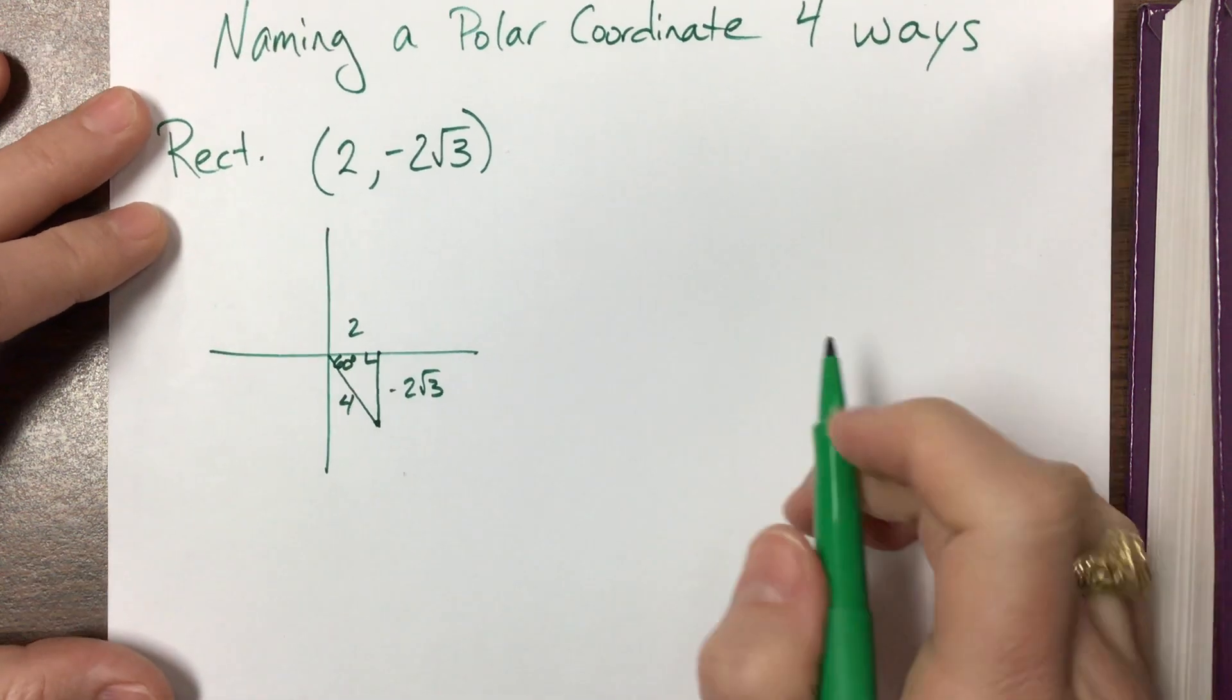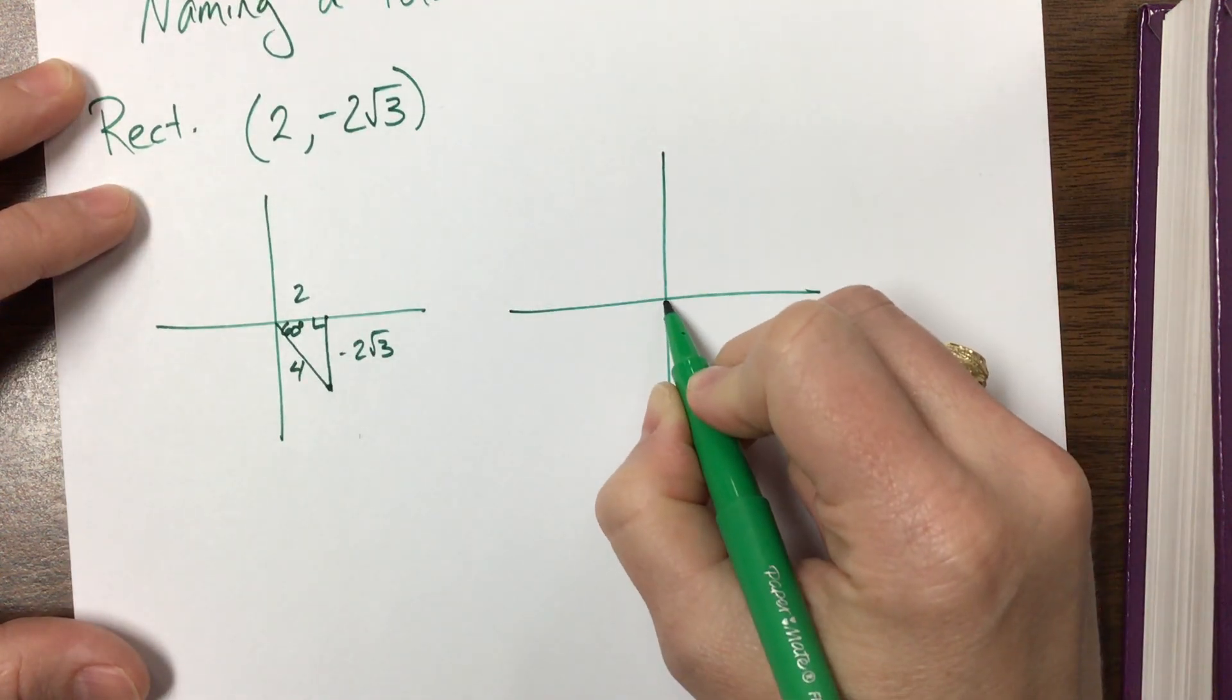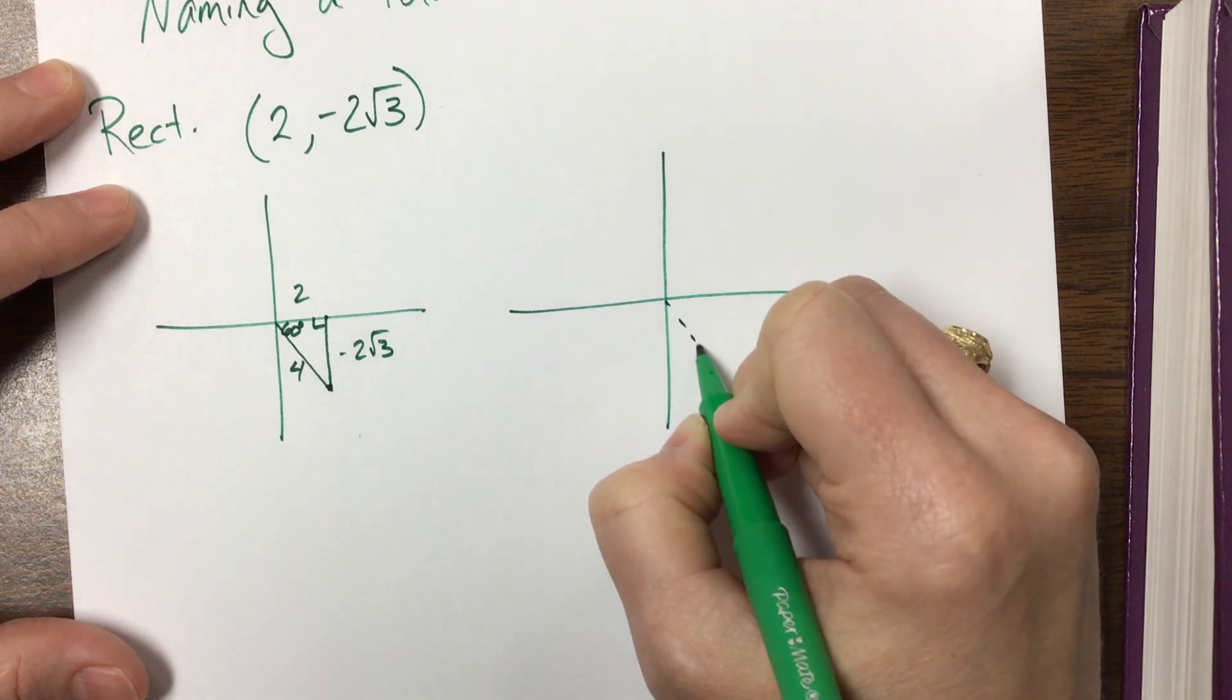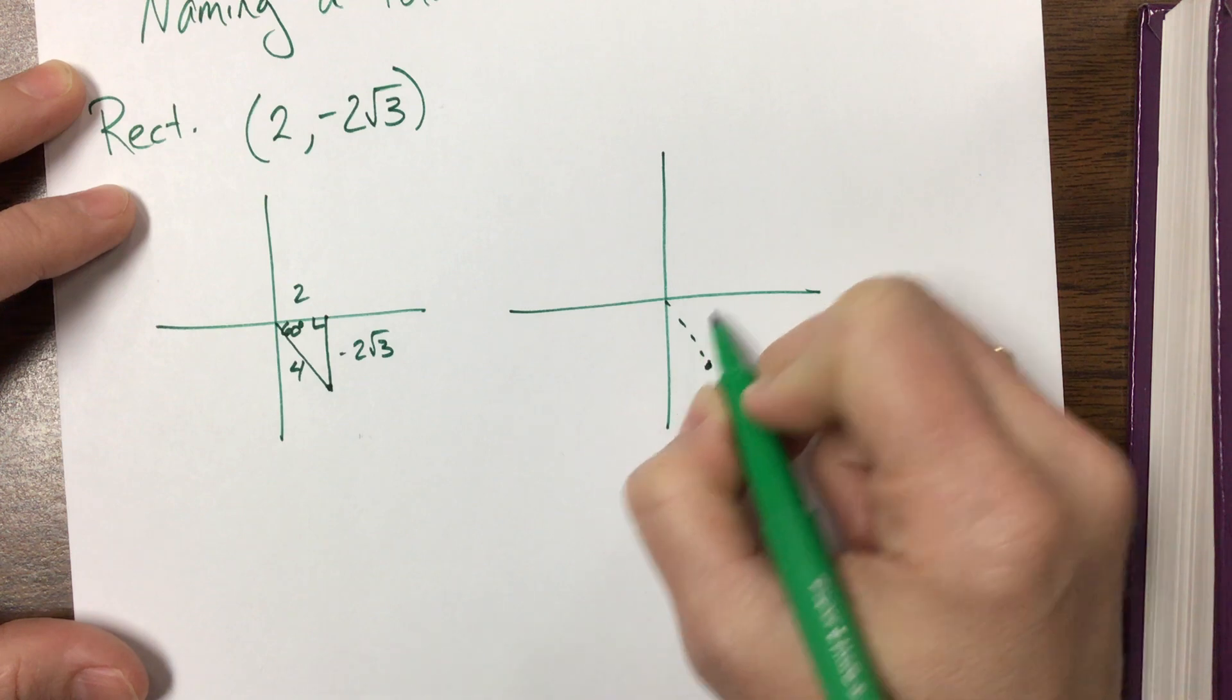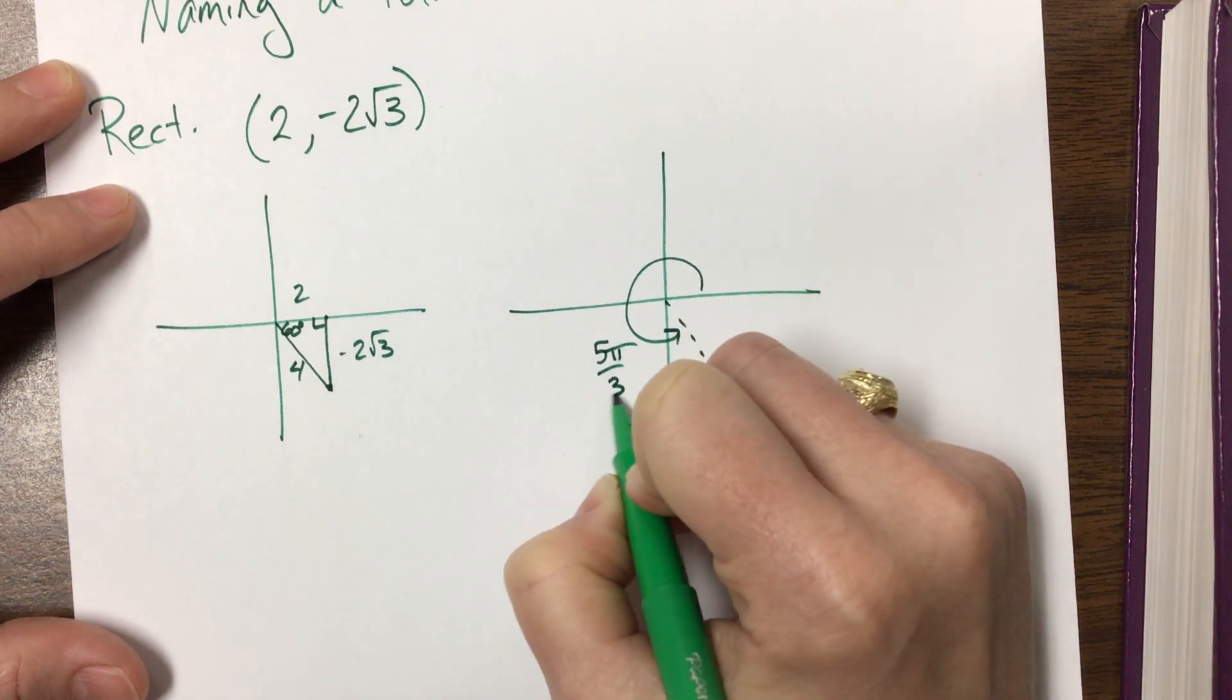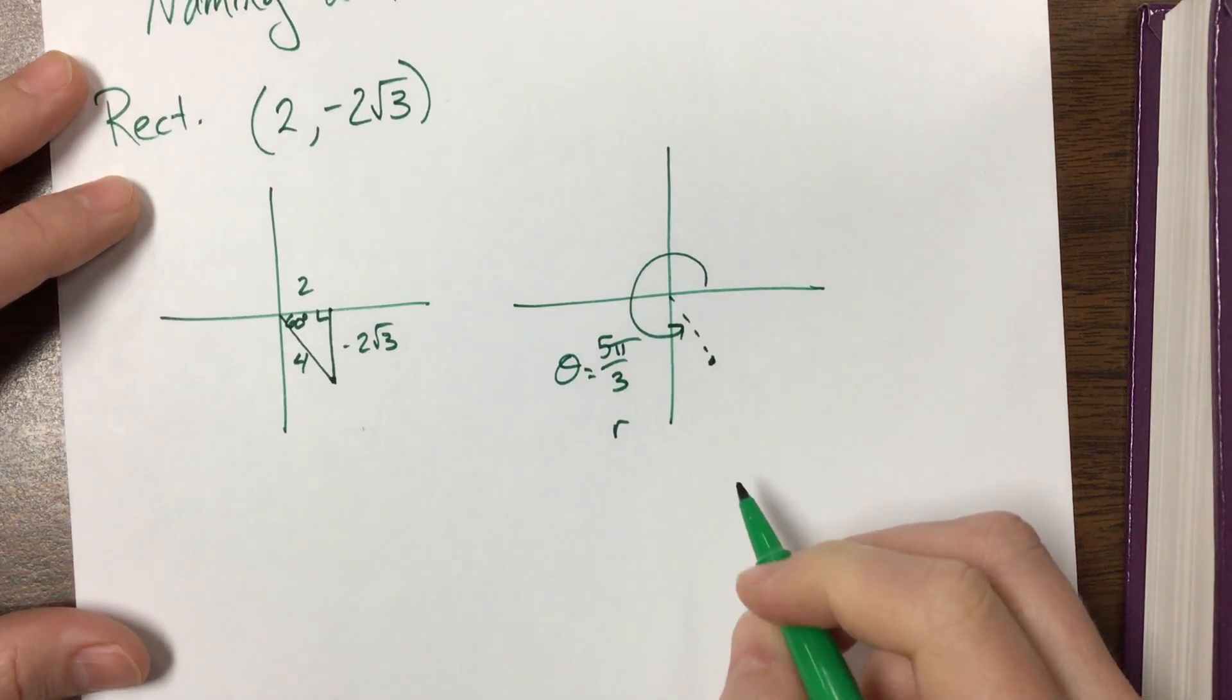So we can think of this as being the point out here where theta is pi - we've gone a negative pi over 3, or we've gone in this direction - we've gone 5 pi over 3, and then our radius. So our theta is equal to 5 pi over 3 and our radius would be equal to 4.